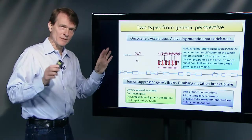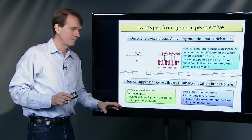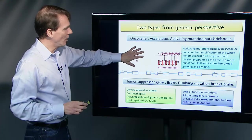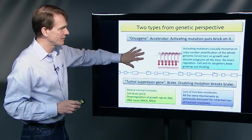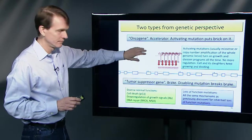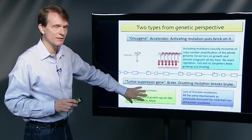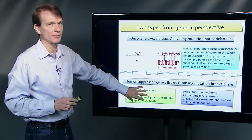Loss of function mutations for tumor suppressor genes use all the same mechanisms: deletions, missense mutations, or anything that abrogates protein function. The key concept: oncogenes require activating mutations; tumor suppressors require disabling mutations.